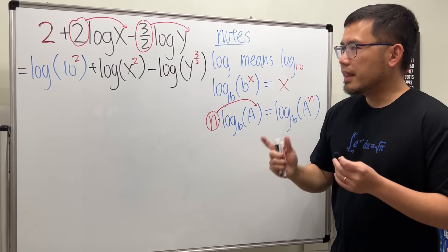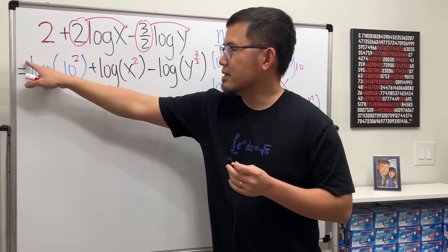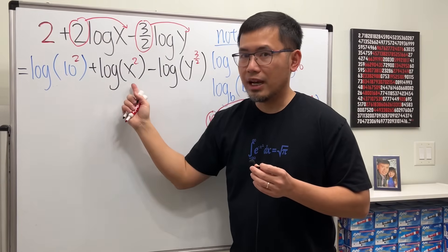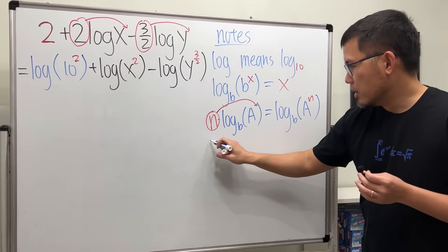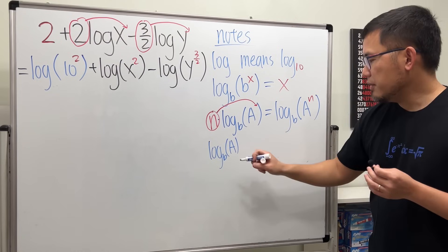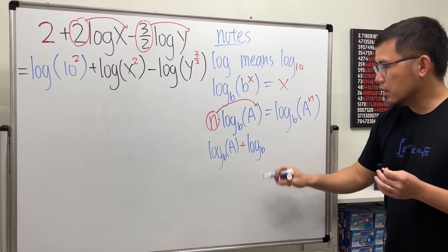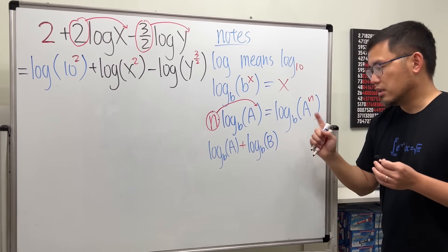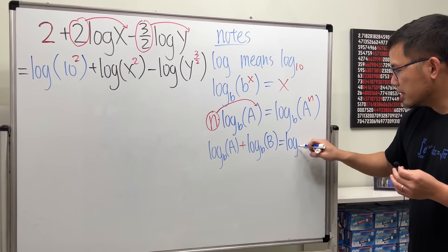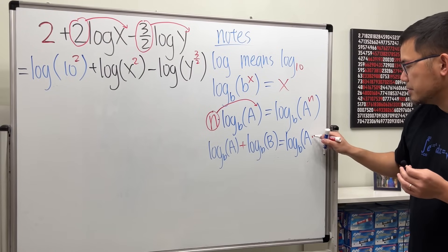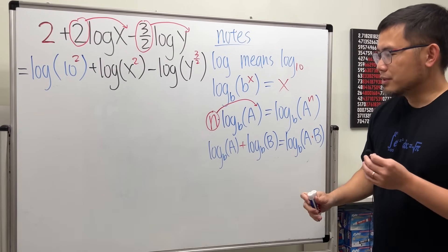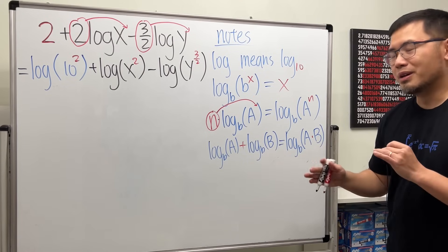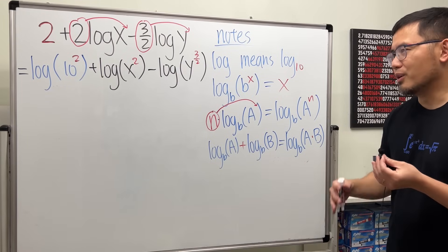So that's the first step. Now we have log, log, log — technically a coefficient of 1 in front of each, so we're ready to go. When we add two log expressions with the same base, we can multiply the insides together inside one log: log base b of A plus log base b of B becomes log base b of A times B. This should remind you of adding exponents corresponding to multiplication — it's because log and exponents are inverses of each other.